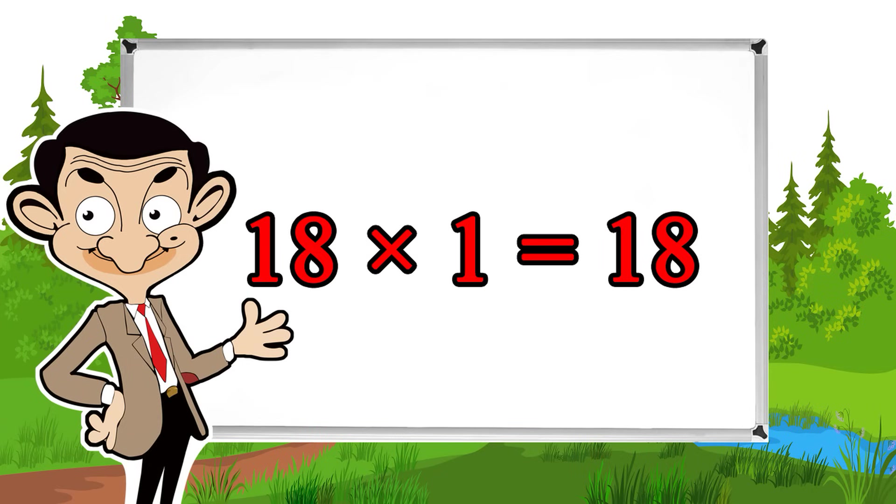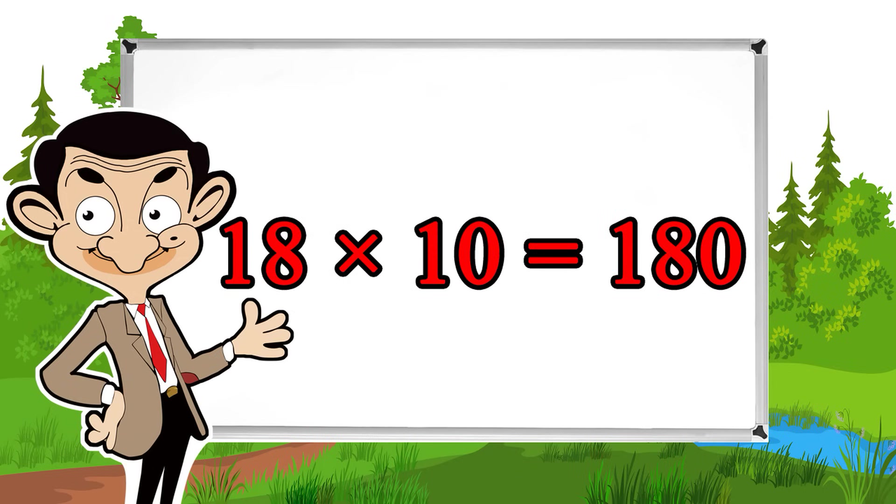18 times 1 equals 18, 18 times 2 equals 36, 18 times 3 equals 54, 18 times 4 equals 72, 18 times 5 equals 90, 18 times 6 equals 108, 18 times 7 equals 126, 18 times 8 equals 144, 18 times 9 equals 162, 18 times 10 equals 180.